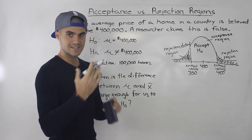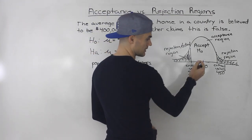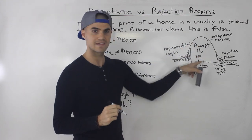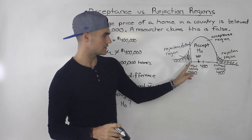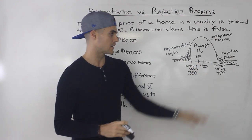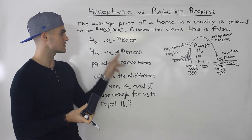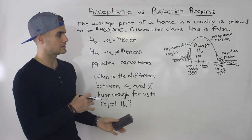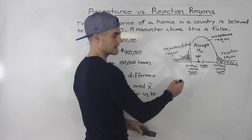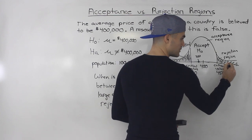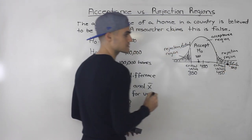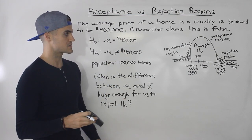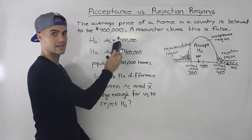So when you take a sample and the mean is 380, that falls within the acceptance region — it's not a large enough difference from $400,000. We would conclude there's not enough evidence to reject the null hypothesis, so the null continues to be the accepted truth. But if we got a sample mean of $500,000, that's out in the rejection region, so we would reject the null — we have enough evidence to be confident it's no longer true.